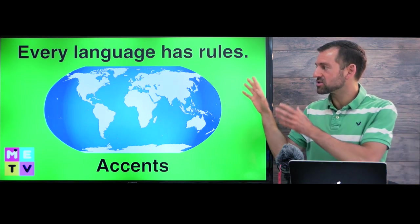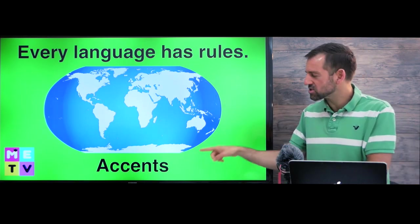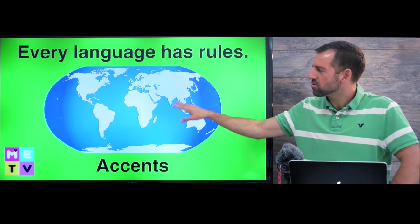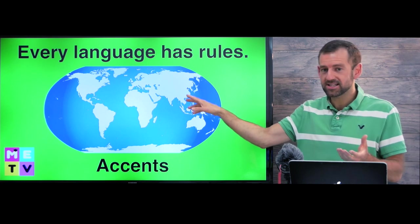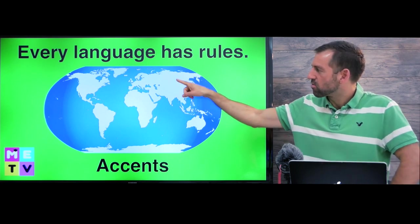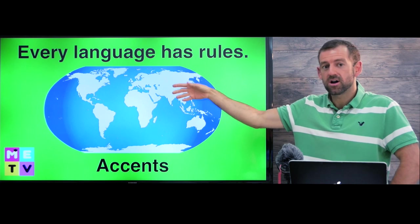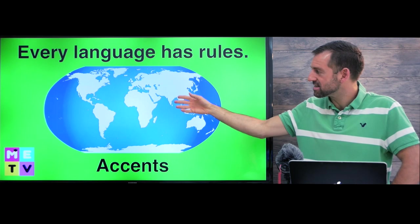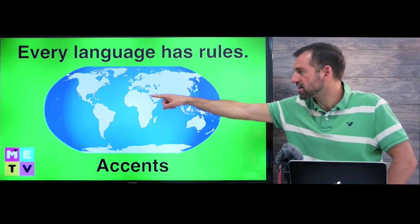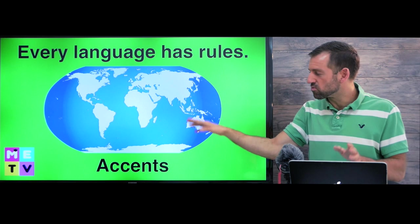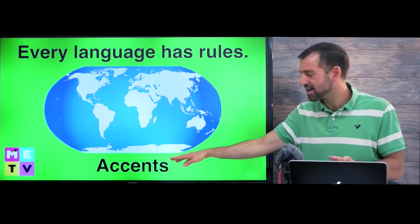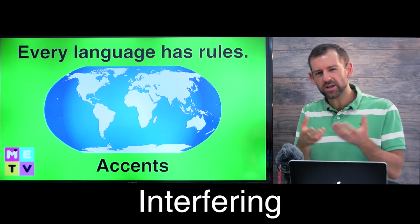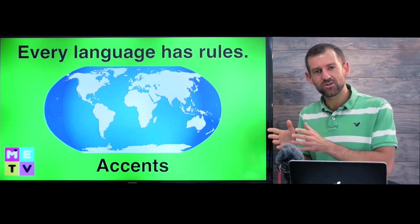Every language has rules. That's where accents come from. So people all over the world learn English but they all have different accents. For example, a Russian person speaking English will have a Russian accent and an Indian person speaking English will have an Indian accent and a Spanish person speaking English will have a Spanish accent. The reason they have accents is because the rules in their language are interfering with the rules in English.